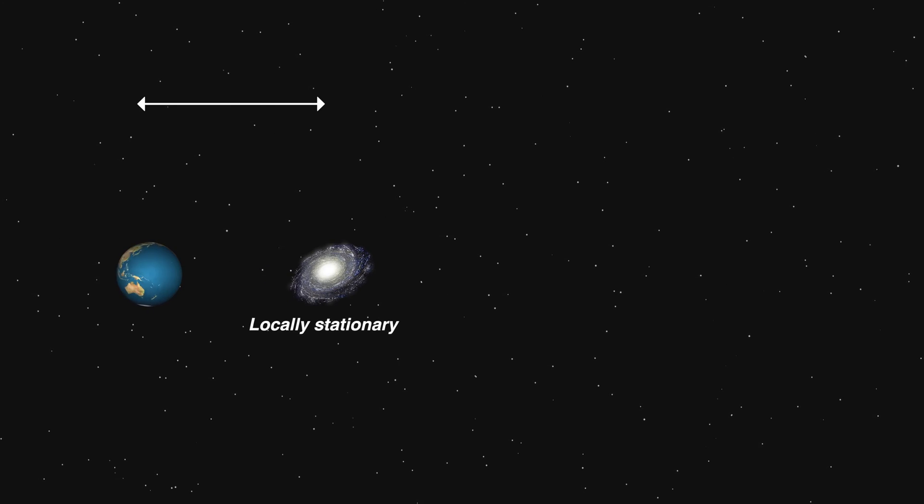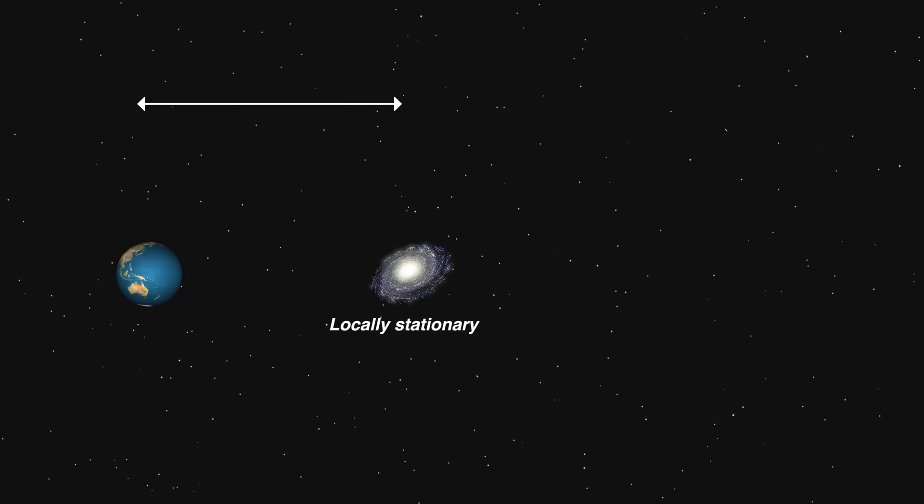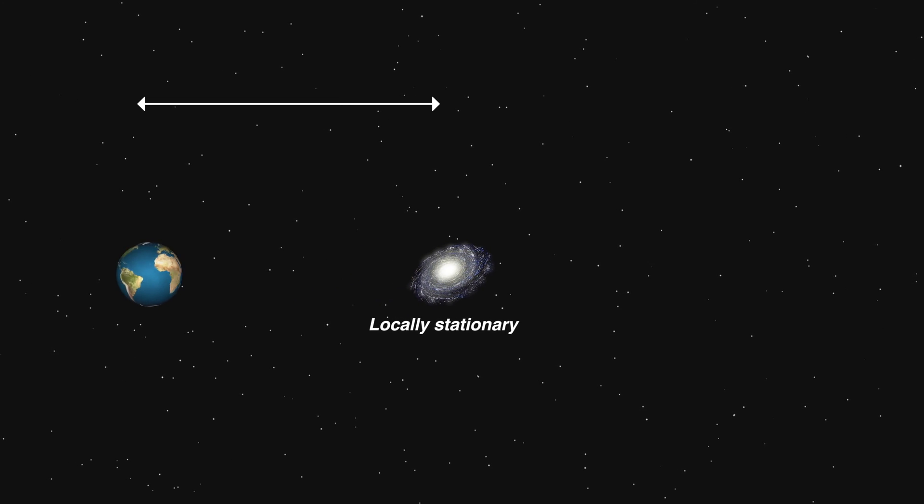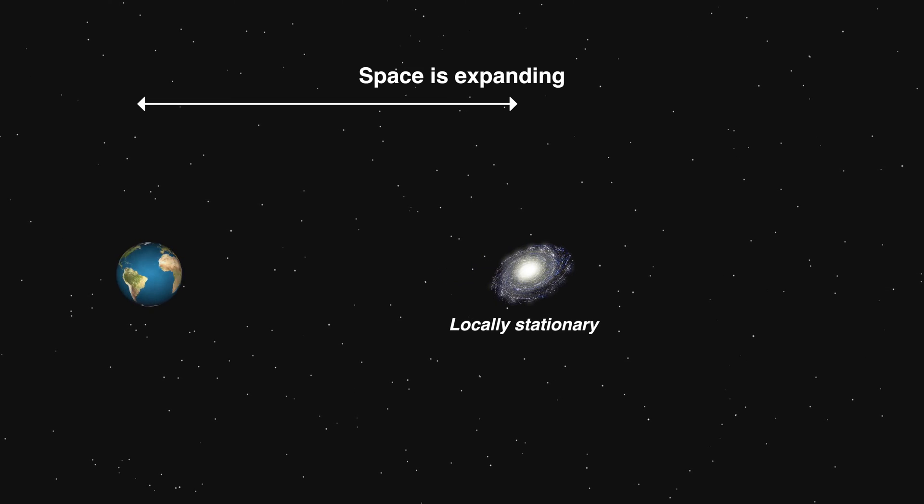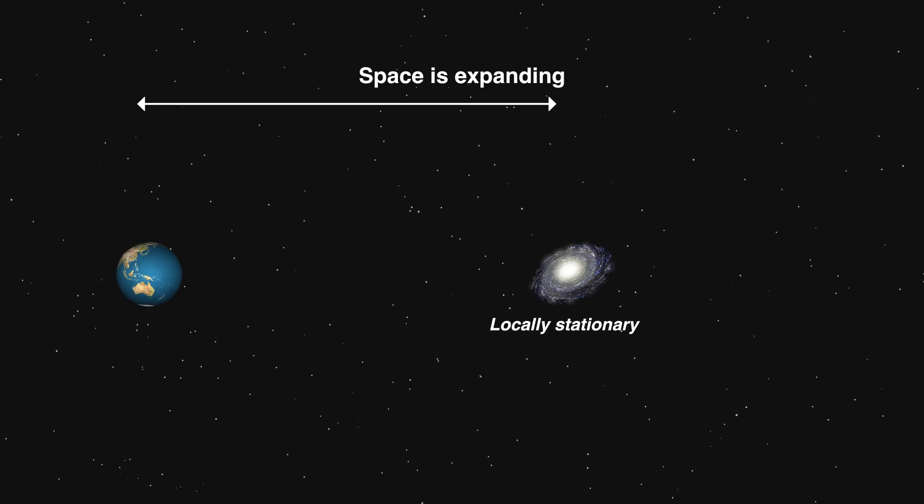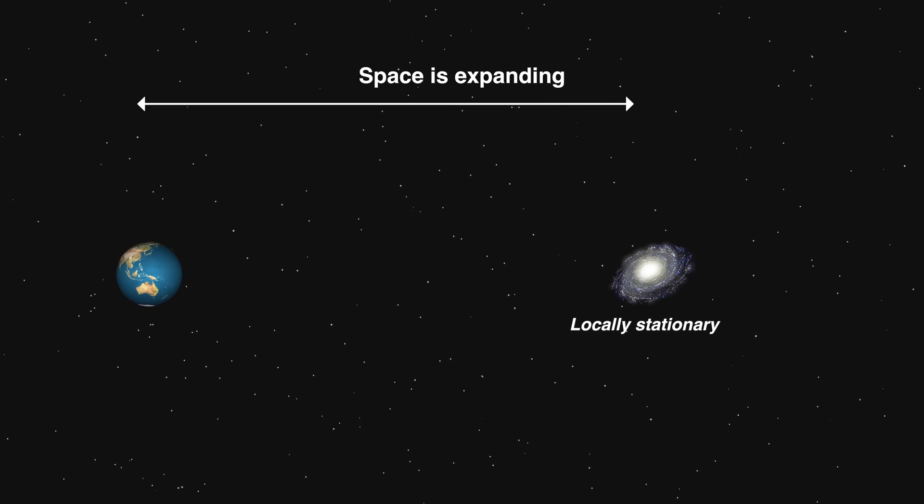So it's entirely fair to say that there exist galaxies that move away from us faster than light, but only in the sense that the expansion of space makes it happen. Those galaxies are stationary, or at least nearly stationary, with respect to their own space. They're not moving through space.